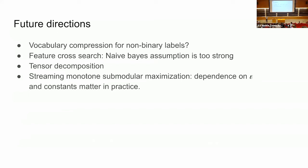I'm going to conclude with some of the future directions. For vocabulary compression, the non-binary labels, I think it's very interesting to look at. For feature cross-search, I think the most important thing is to get rid of the naive Bayes assumption. Tensor decomposition, that's really not my area of expertise. I just hope that I showed you that's an interesting problem to look at. For streaming monotone submodular maximization, I think these dependence on epsilon and constants are really important, at least in practice. Even if you're running experiments for more applied venues, they really matter. If you can get rid of the epsilon factors, if you can split it up by another factor of 10, that definitely is helpful. Thank you.